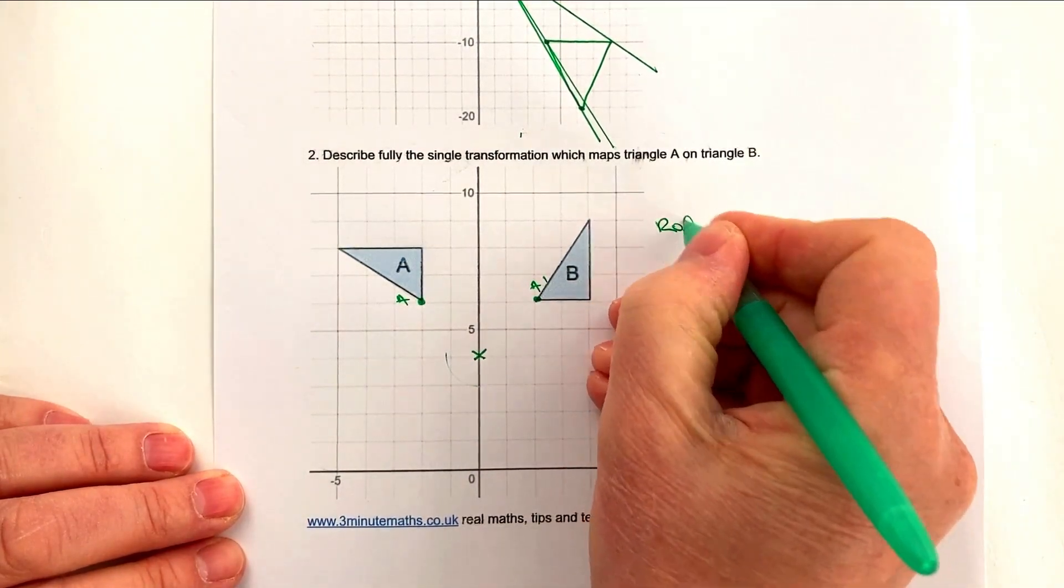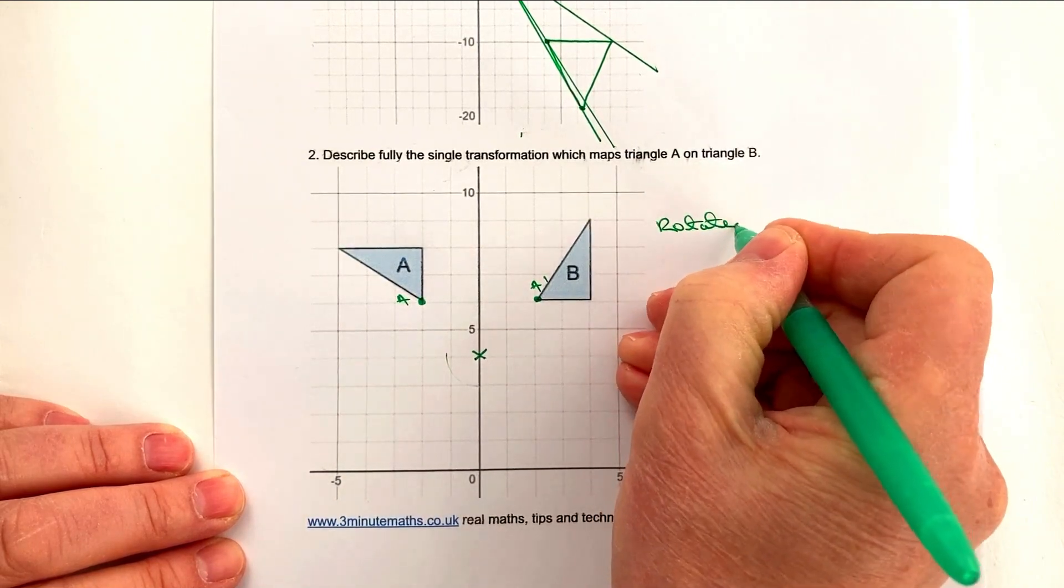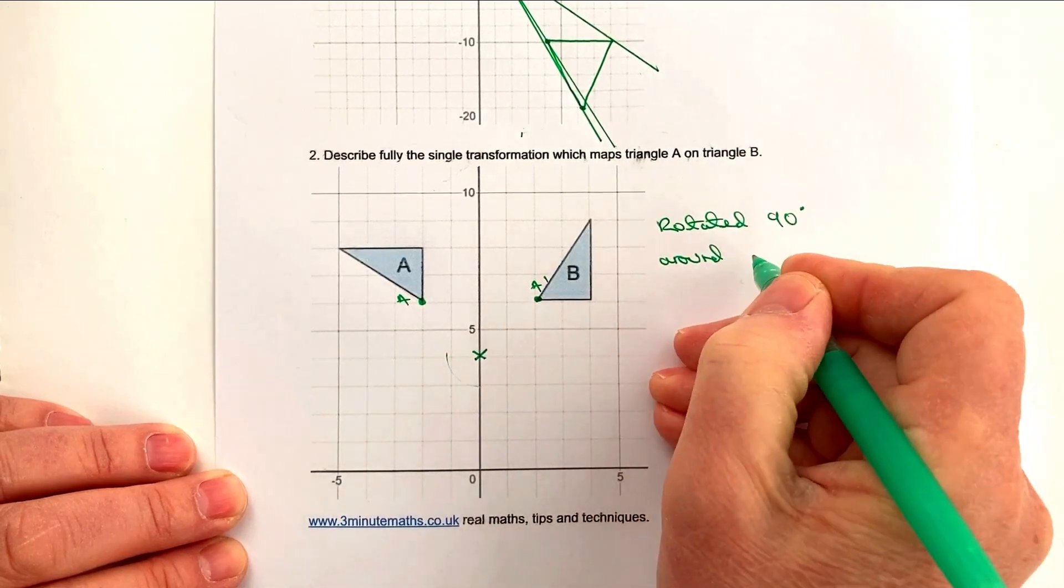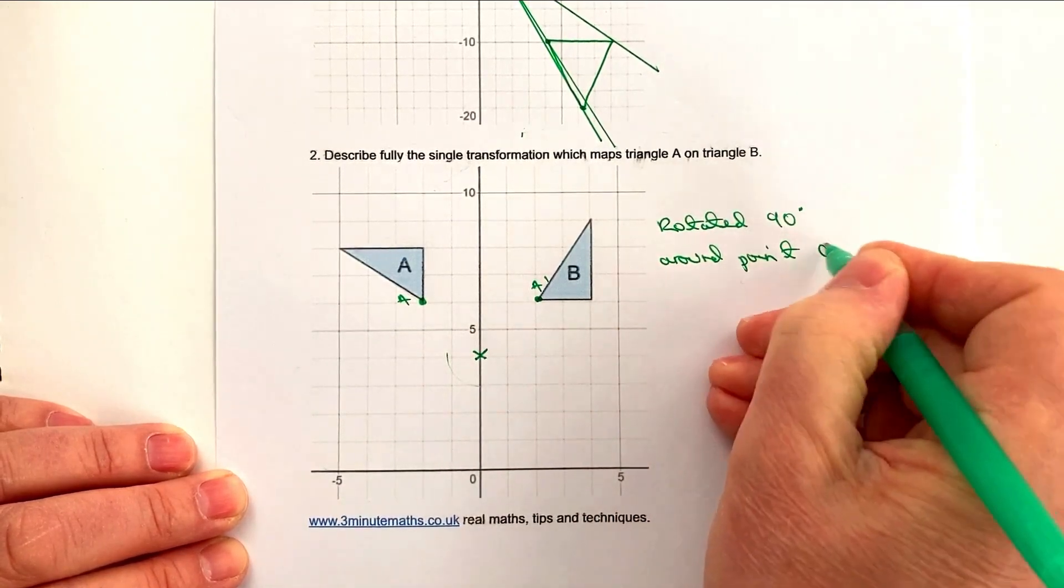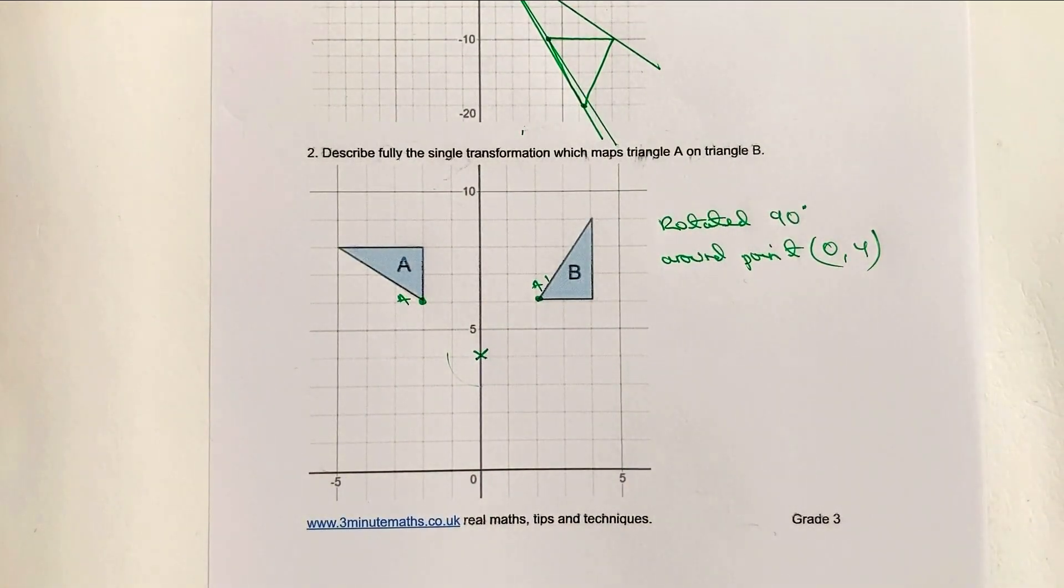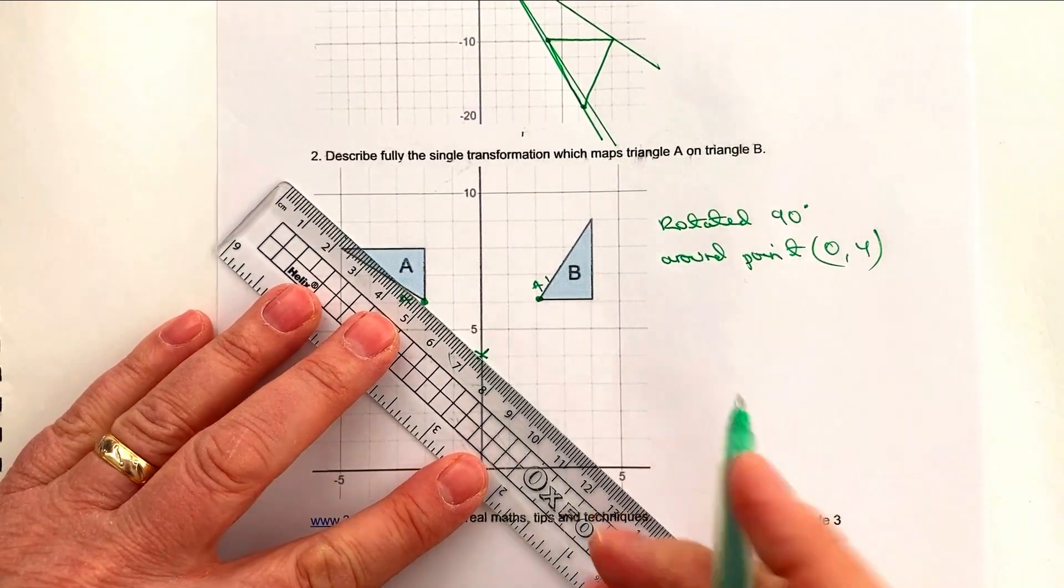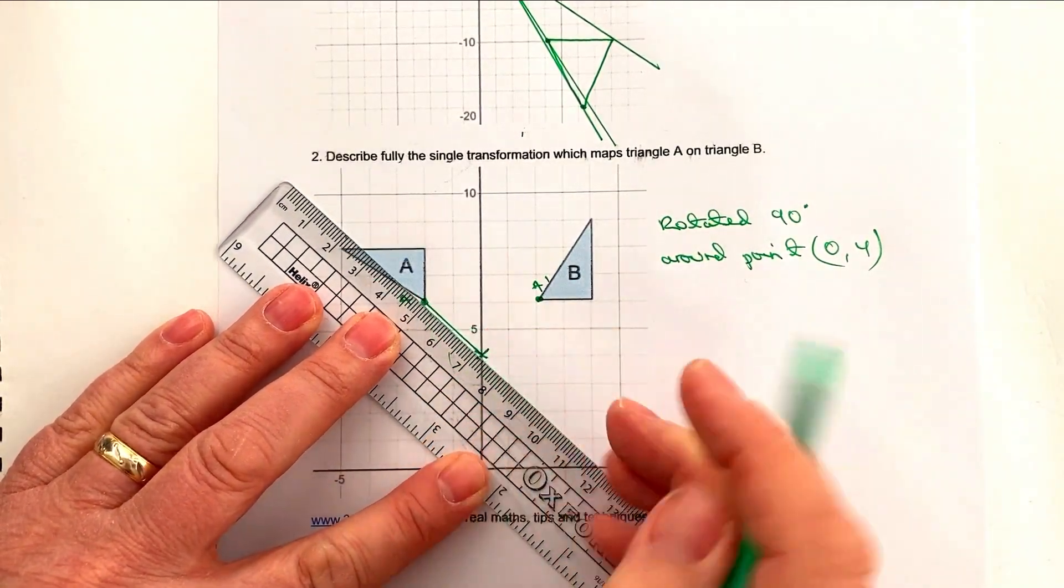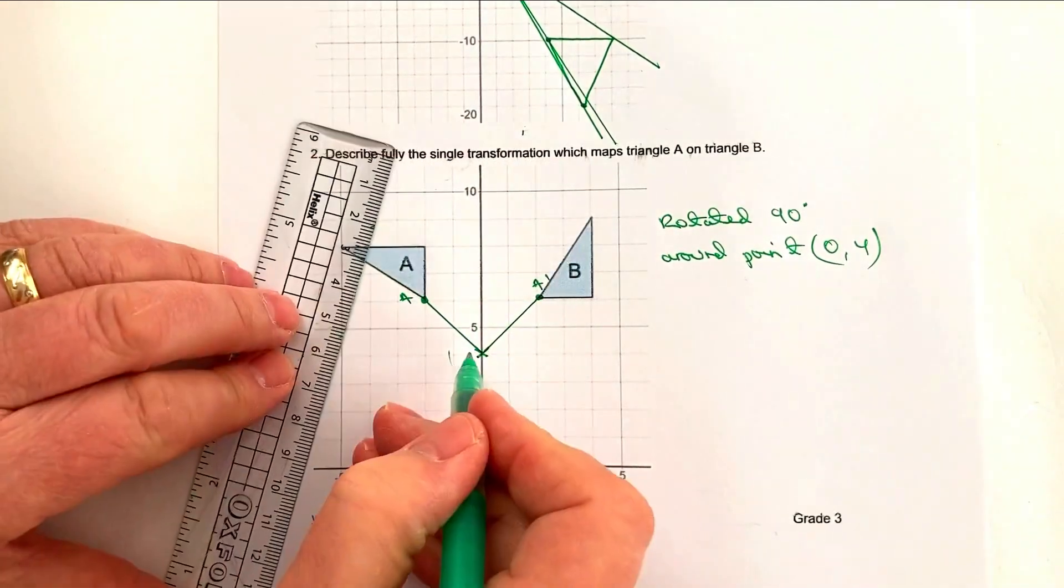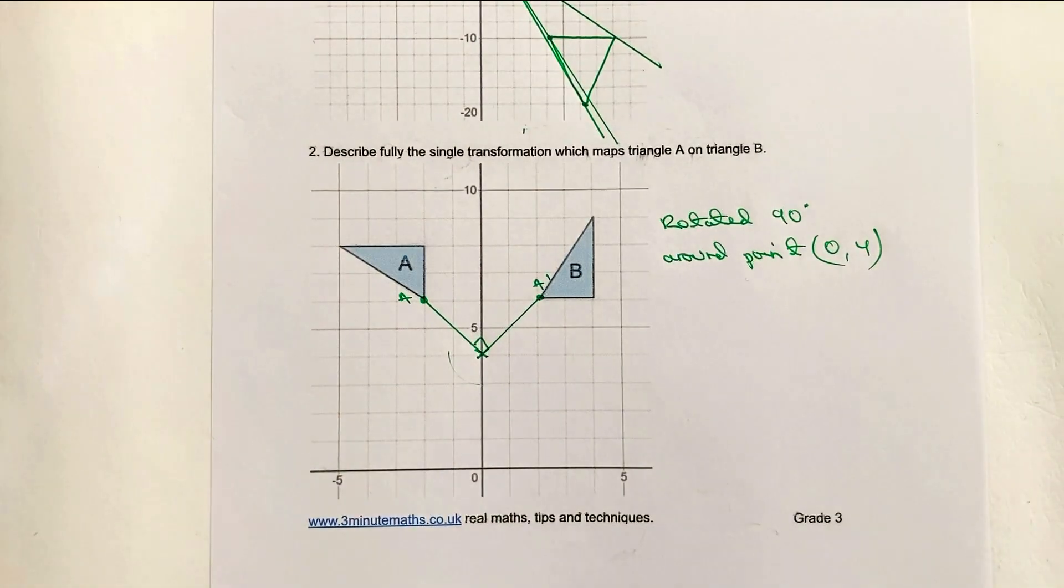So if I just mark that actually on the grid, that would be a 90 degree rotation. So what can I say about this? Well, it's rotated 90 degrees around point (0,4). And that would give you full marks for this particular question. Hope that's been useful for you. If you do it by translation of vectors, then you will see actually that we've got a 90 degree angle at this particular point. So hopefully you can see there that it works both ways. Let's move on to the next one.